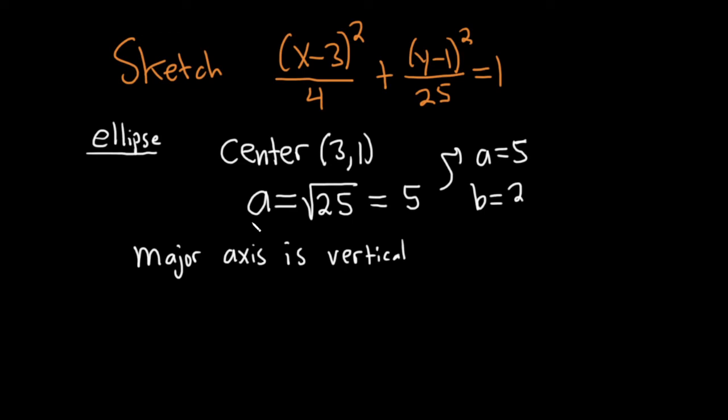So in an ellipse, a is the square root of the bigger number. In this case, the square root of 25, so it's 5. b is the square root of the other one. To find the center, switch the signs. Okay, let's go ahead and graph this.